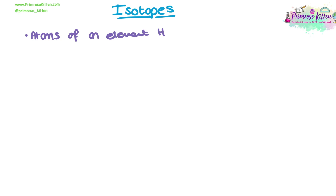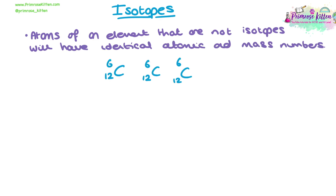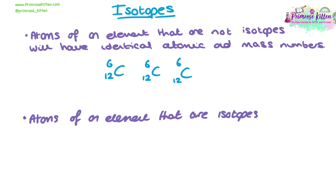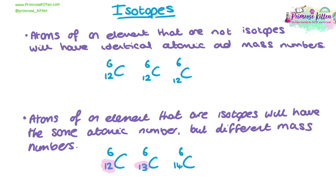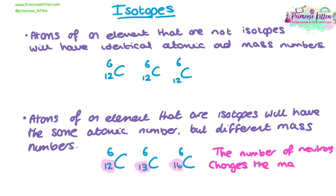When looking at atoms of the same element, you won't always find isotopes. If they're not isotopes, the mass numbers will be identical. Looking at these three carbon atoms, they have the same atomic number and the same mass number, so they are not isotopes — they are identical atoms of the same element. However, if three carbon atoms have the same atomic number and symbol but three different mass numbers, this tells us they are isotopes, because the different number of neutrons in the nucleus affects the mass number.